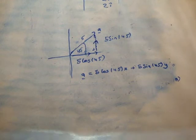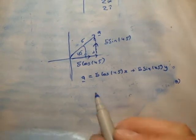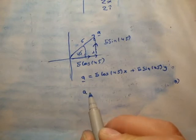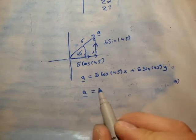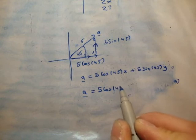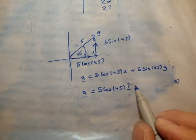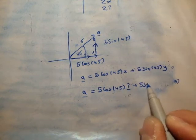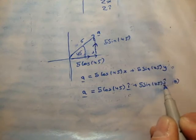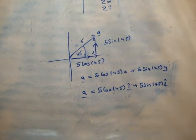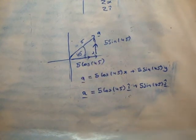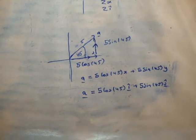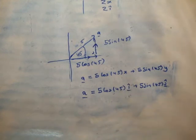So the resultant vector A of magnitude 5 at a direction of 45 degrees is equal to 5 cos 45 i-hat in the x-dimension plus 5 sine 45 j-hat in the y-dimension. You could also write it as 5 cos 45 x plus 5 sine 45 y.